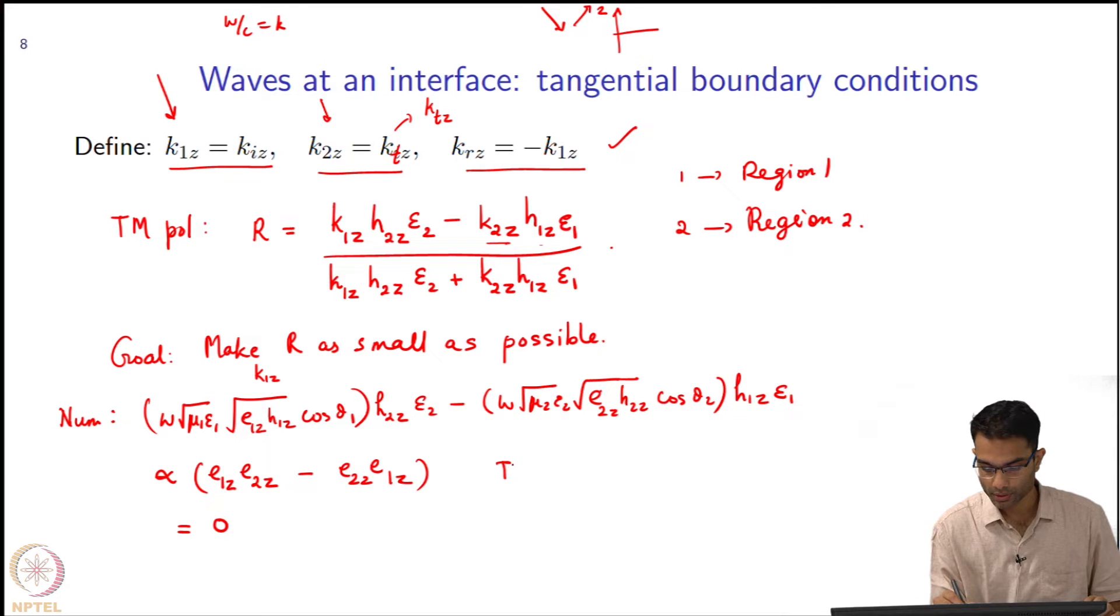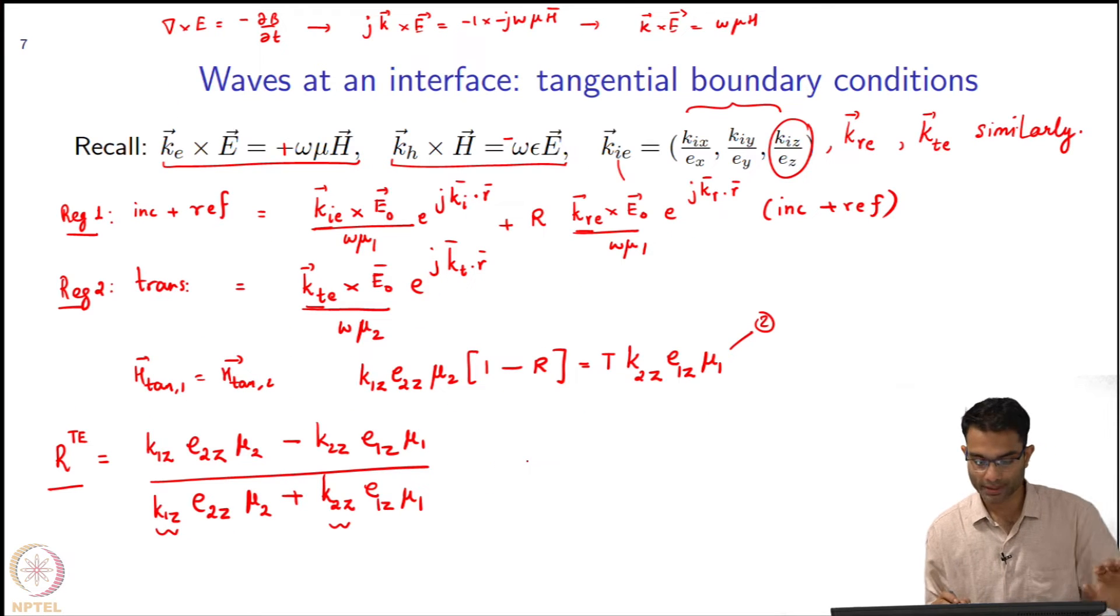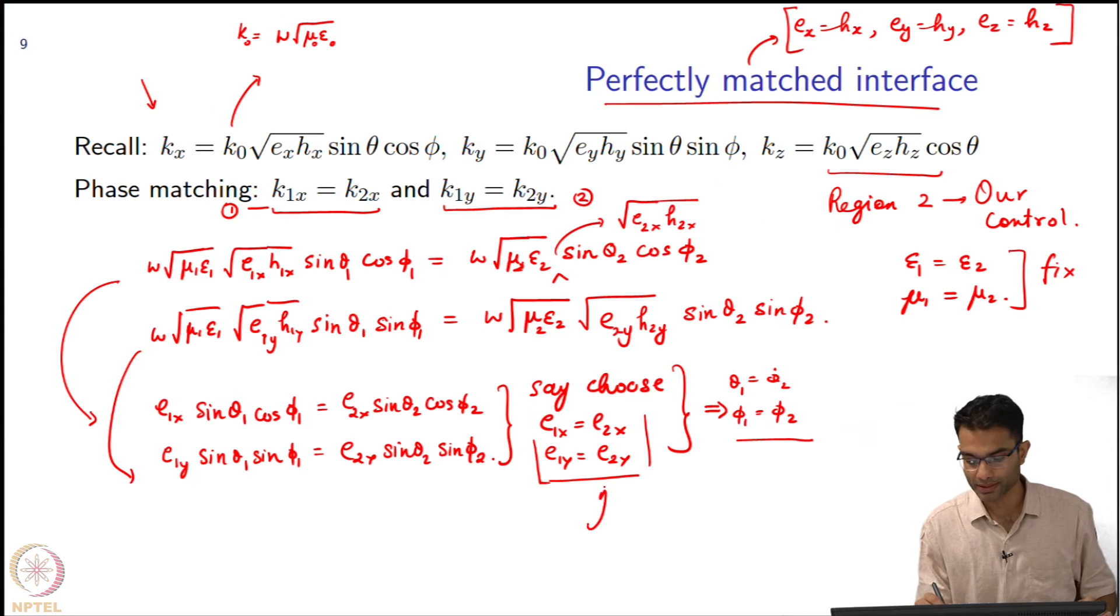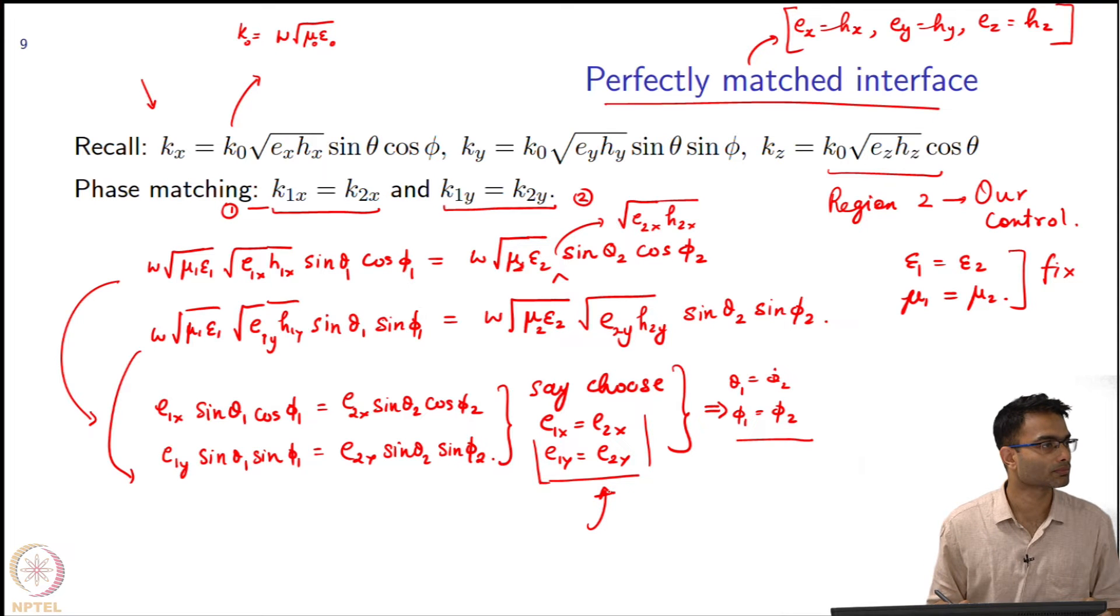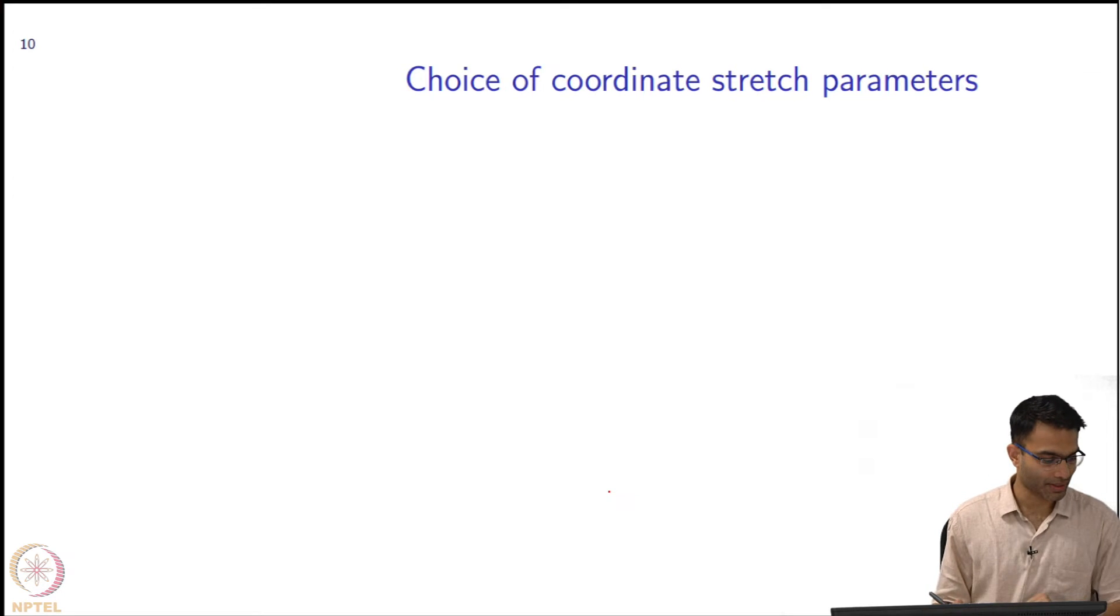This was in the case of TM. If you look at the expression for TE same thing you will notice happening. Here also I will get e1z from the first term and then e2z. Similarly, I will get e2z from here and e1z. So I am going to get this equal to zero, the reflection coefficient for TM and TE polarization. It is polarization independent reflection coefficient at any incident angle by this choice of stretching parameter.